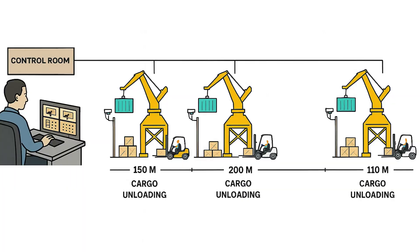There are several locations where the client needs to install IP cameras and bring the signal back to the control room. The maximum length between the last location and the control room is about 500 meters. If we can handle the network connection between the last location and the control room, we should be able to deal with the rest of the locations.